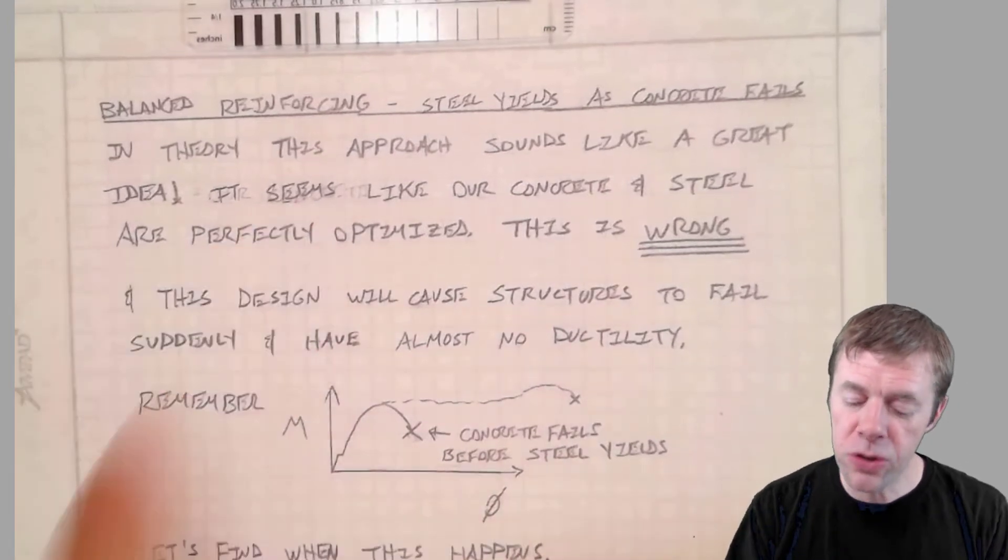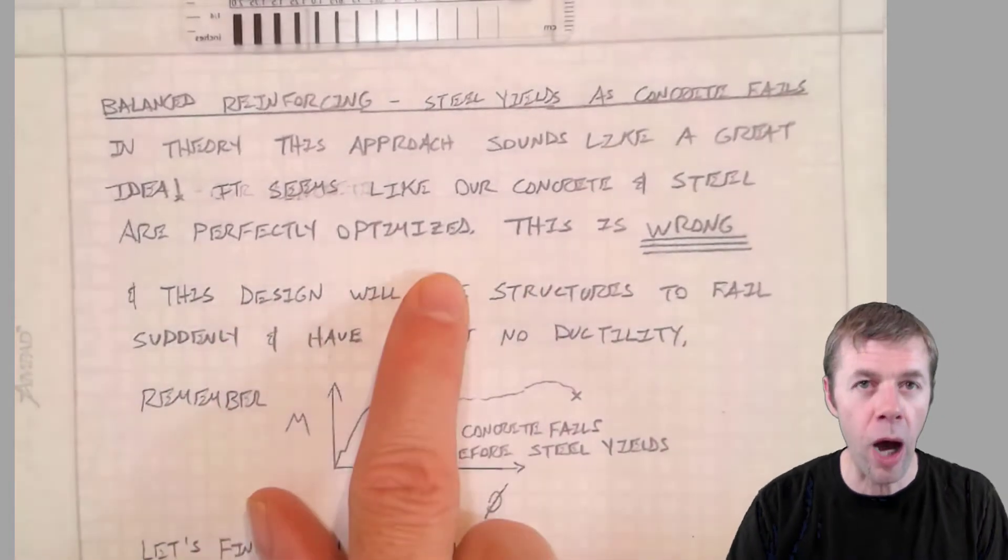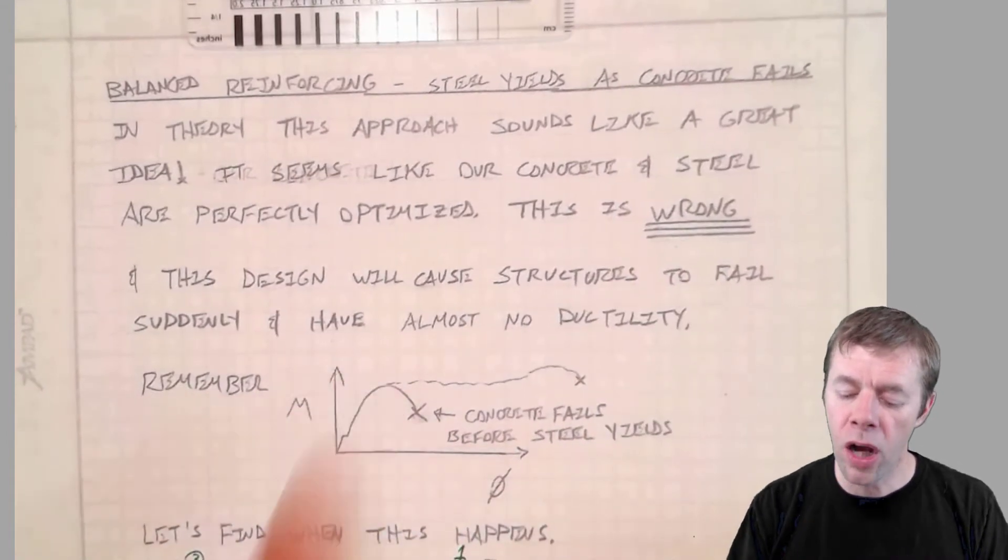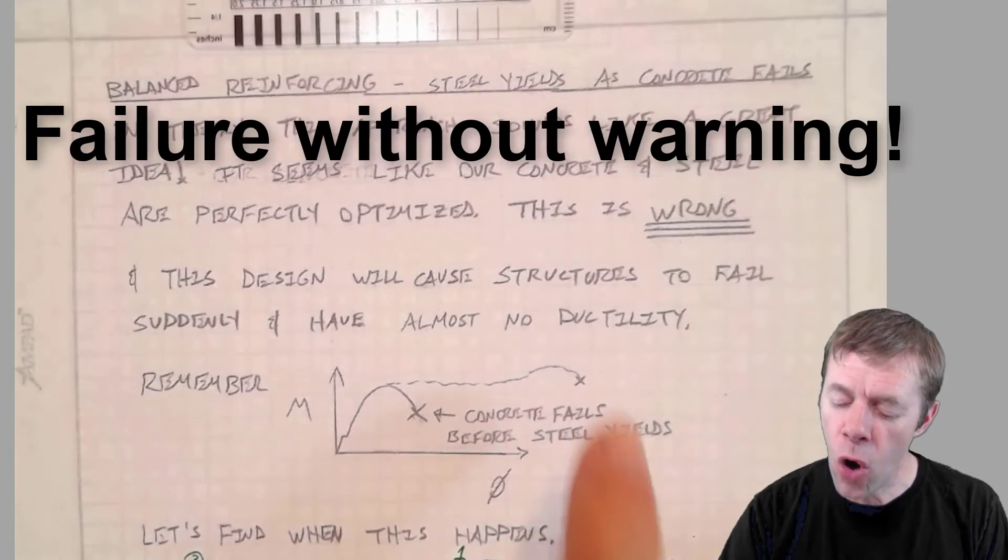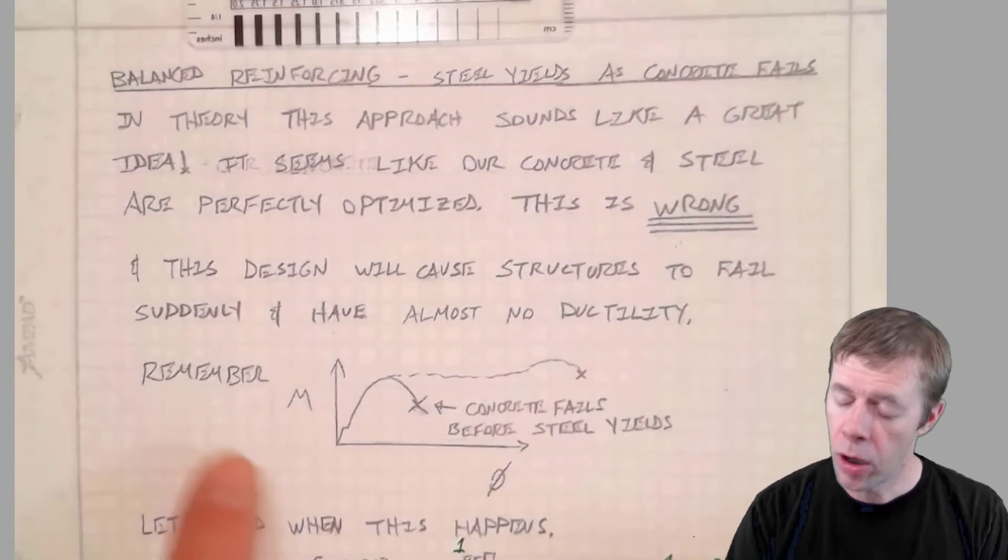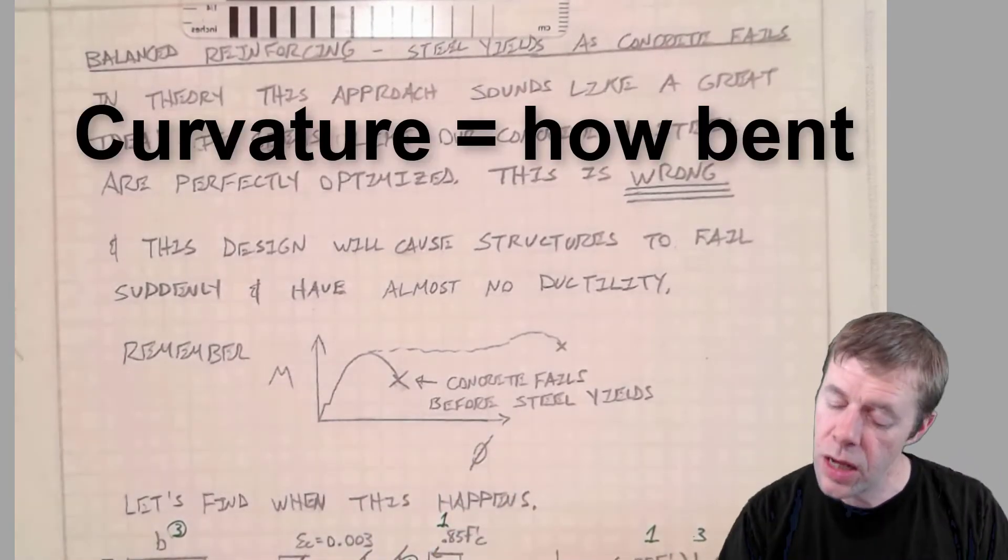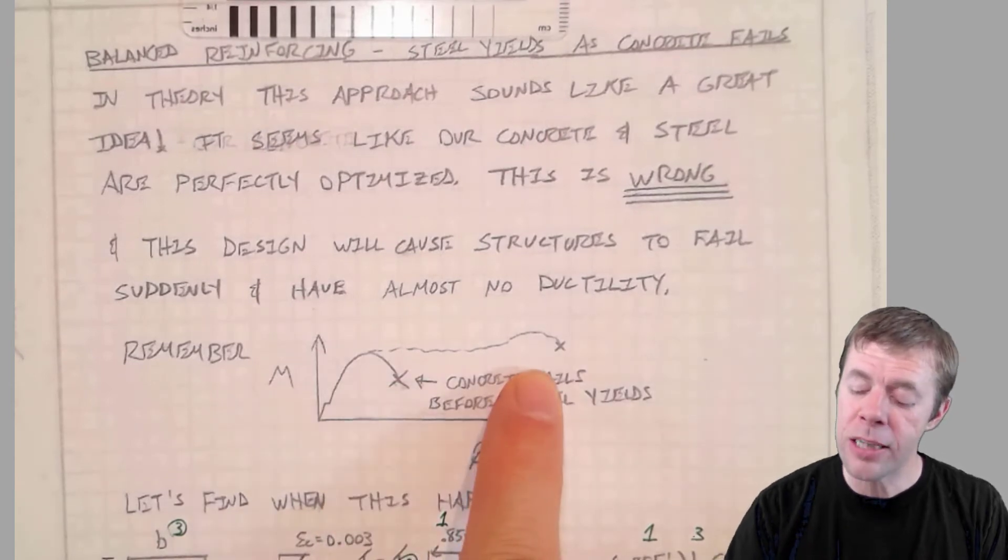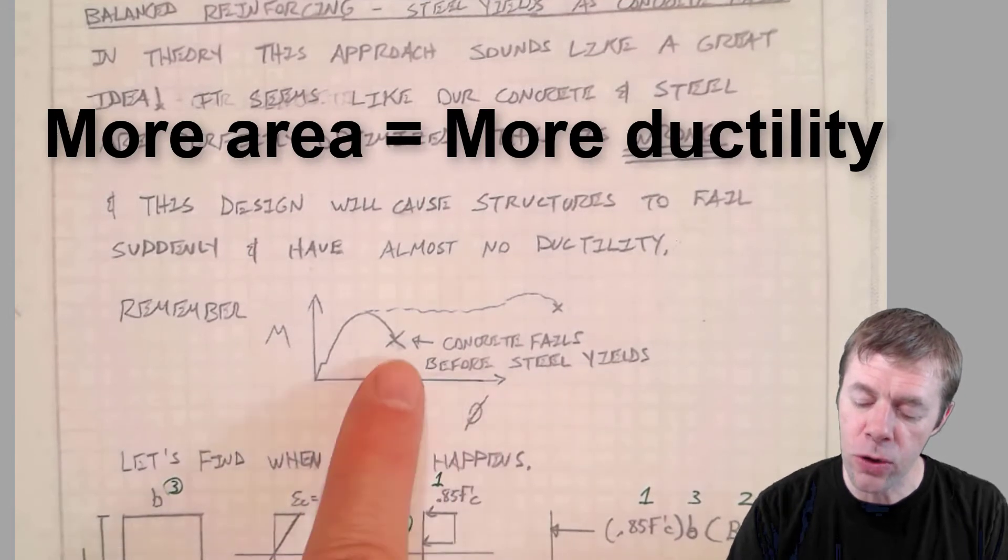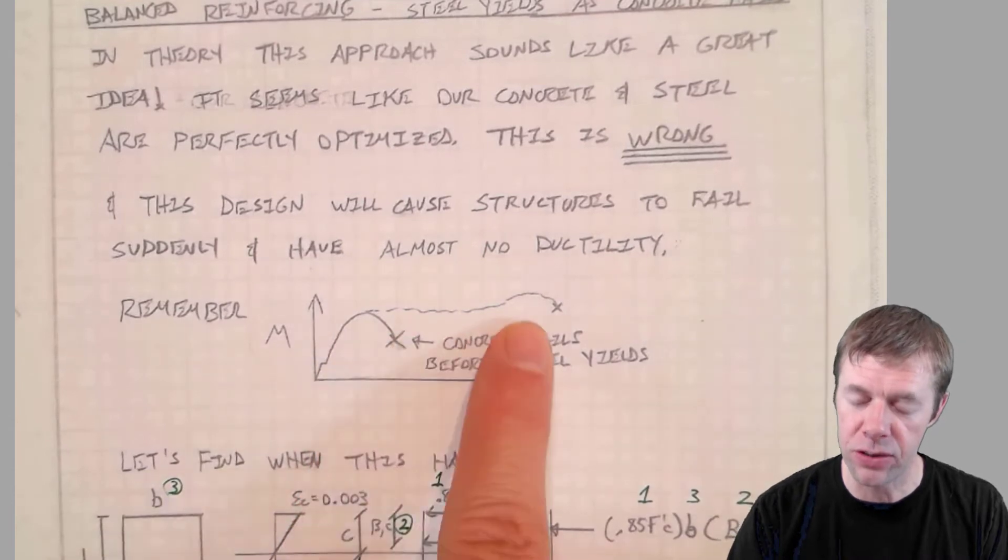In theory this approach sounds like a great idea. It sounds balanced right? It seems like our concrete and steel are perfectly optimized. Wrong. Totally wrong. This design will cause structures to fail suddenly and have almost no ductility. Remember if I'm loading a structure and this is like curvature or how bent it is. We want a lot of this. We want it to be able to bend and give. But if the concrete's going to fail before the steel yields or right as the steel yields you're going to get this. You don't want this. You want this.